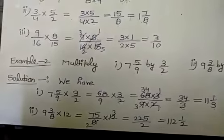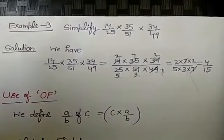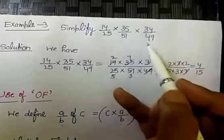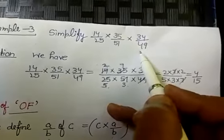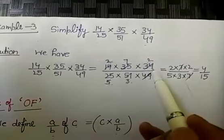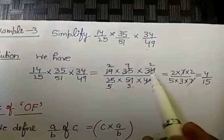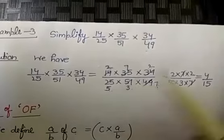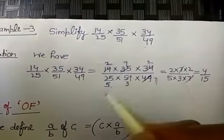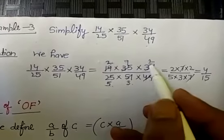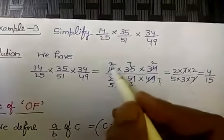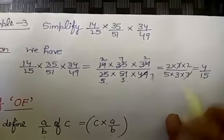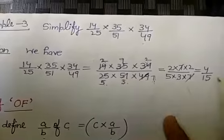In the same way, you can try the second part. Now let us move on to Example number 3 — simplify: 14 upon 25, multiplied by 35 upon 51, multiplied by 34 upon 49. We multiply all the numerators: 14 into 35 into 34, upon all the denominators: 25 into 51 into 49. Reducing by common factors: 5 divides 35 and 25; 17 divides 34 and 51; 7 divides 49 and 14. This gives 2 into 7 into 2, upon 5 into 3 into 7. The 7s cancel, leaving 4 upon 15. That's the answer.